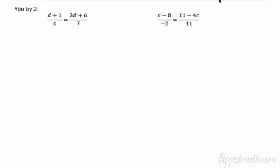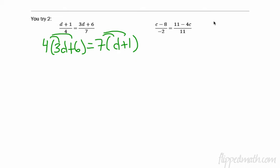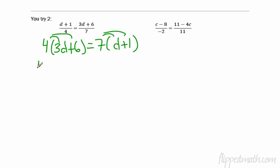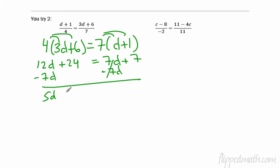Let's look at You Try. Pause the video, you try these two. Here's this problem here. It's 4 times (3d + 6) = 7(d + 1). We distribute both sides. You get 12d + 24 = 7d + 7. The smallest one is the 7d - they cancel out. So we get 5d + 24 = 7. Now subtract 24 from each side.